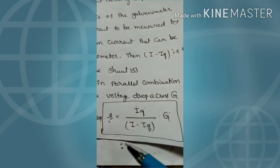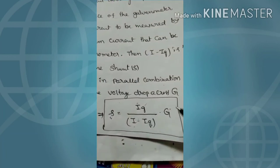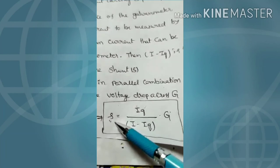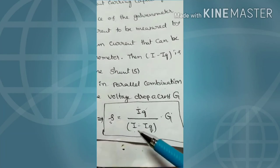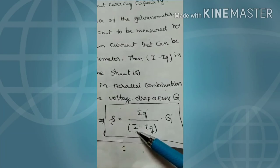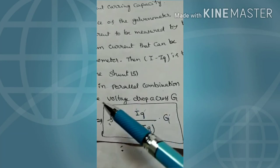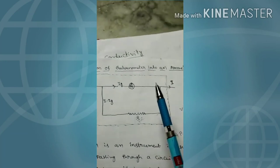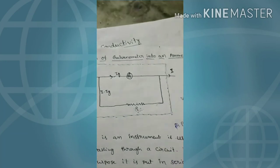From this equation, rearranging for S: S = (IG × G) / (I minus IG). This is the shunt resistance formula. If you add a shunt of this value, then the total current I can be measured. This completes the conversion of the galvanometer into an ammeter.